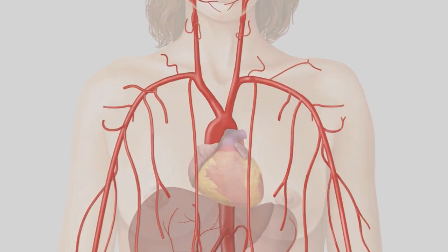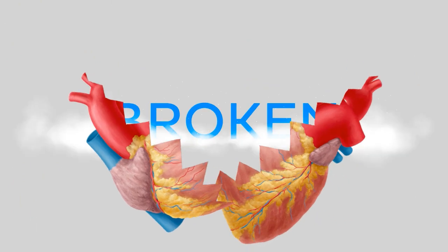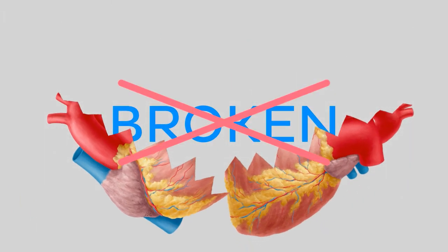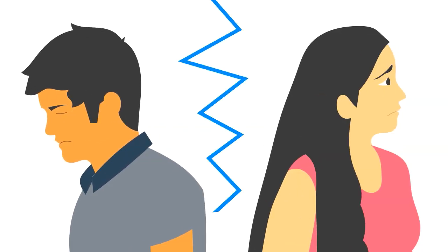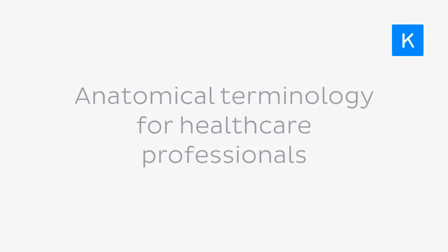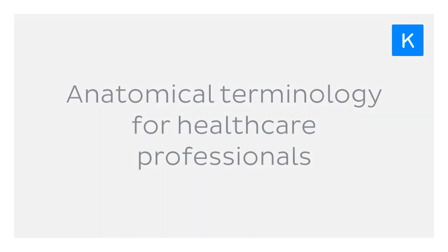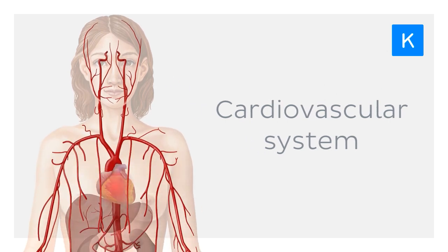In anatomy, there are many terms used to describe the condition of the heart. Broken, however, is not one of them. Fortunately for you, learning about the terminology of our heart and blood vessels need not be as painful as breaking up with the love of your life. Welcome to episode 5 of the KenHub series, Anatomical Terminology for Healthcare Professionals: Avoiding heartache with cardiovascular terminology.